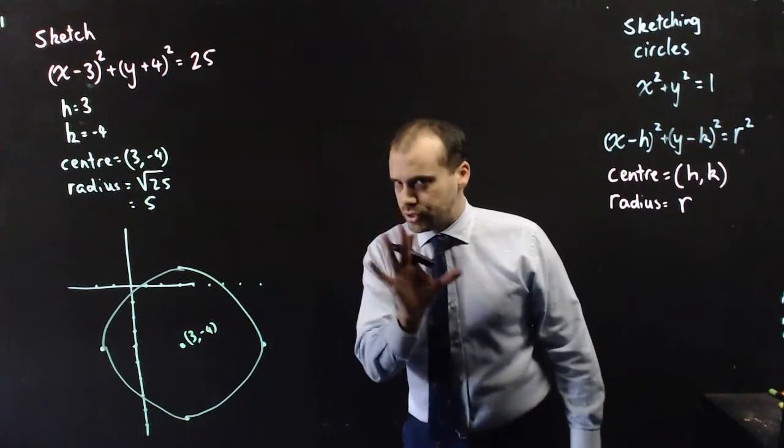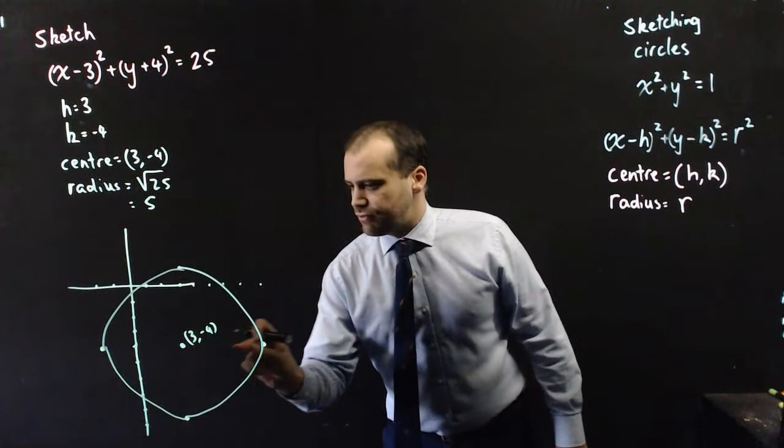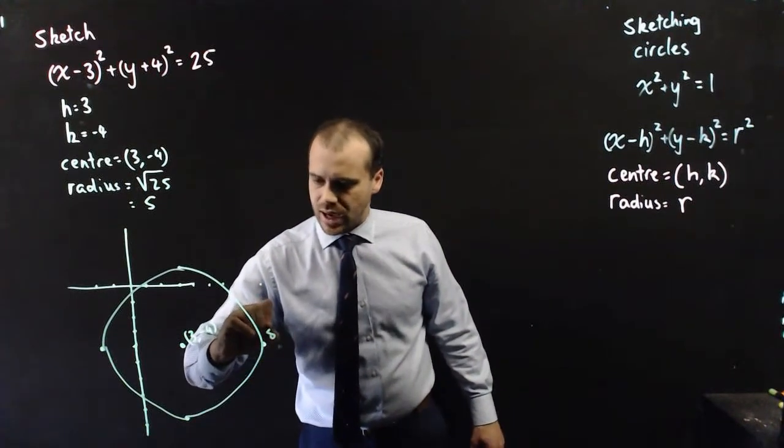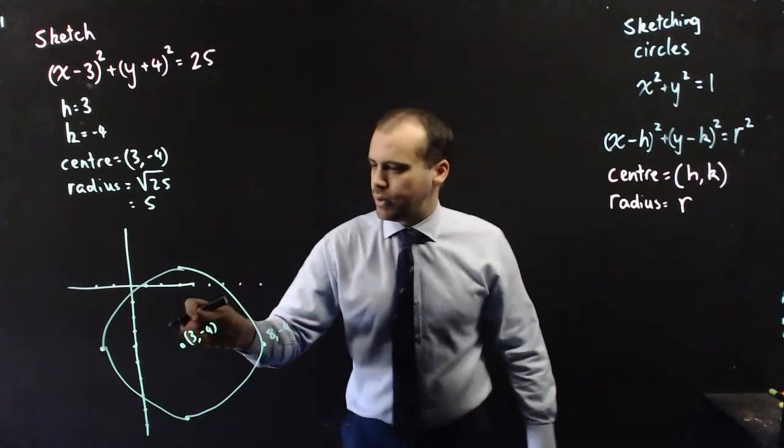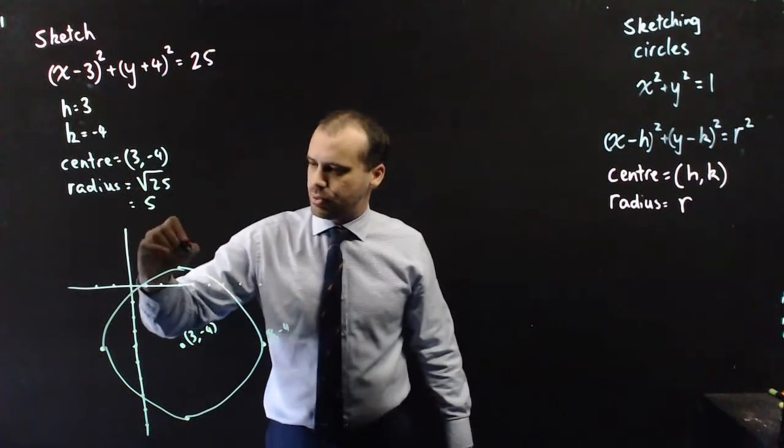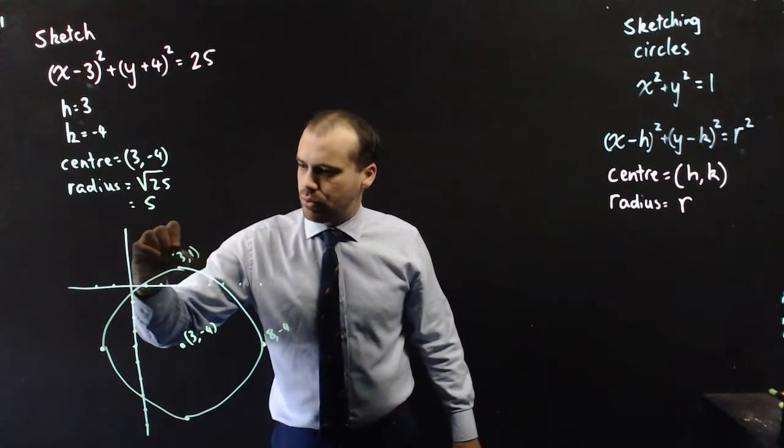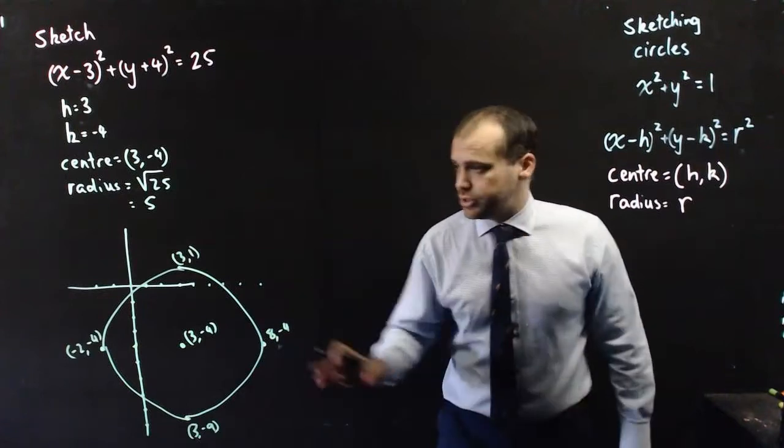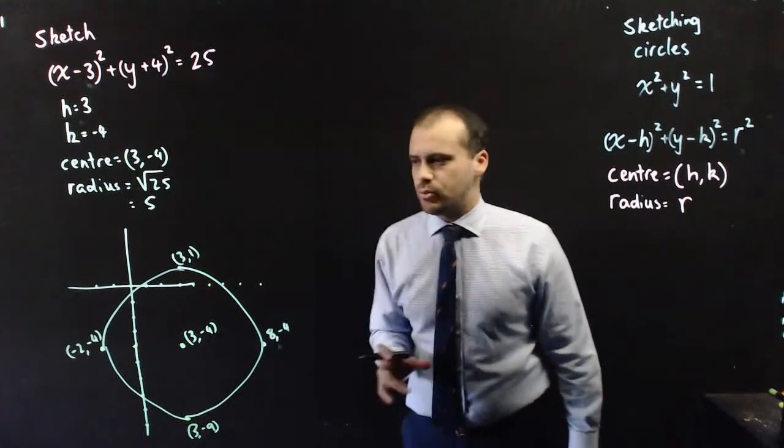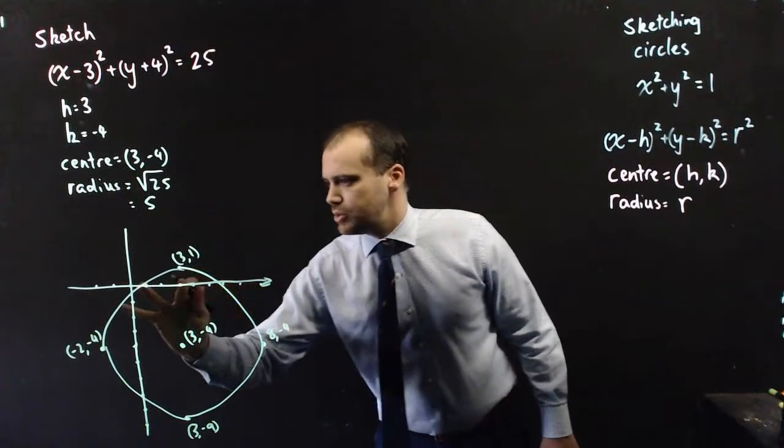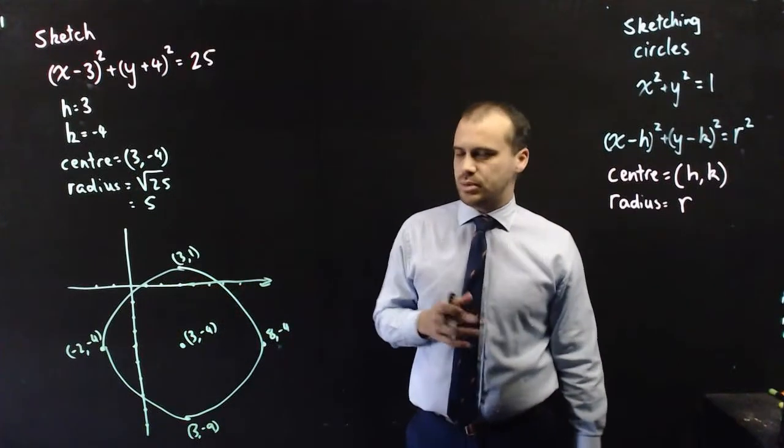Now, just to make sure that you fully get it, we're just adding 5 to here, so this point here is 8, negative 4. We're adding 5 here, so this point is 3, 1, and so on. Now, no doubt you are seeing some x-intercepts and some y-intercepts. Now, you can see here that there are 2 x-intercepts and 2 y-intercepts, I believe.